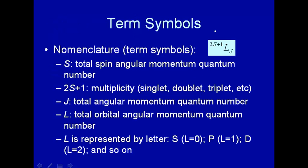Now chemists, because they want to make things extremely confusing for undergraduates, have developed term symbols. We just don't say S equals something, L equals something, J equals something. Instead we use this symbol here.